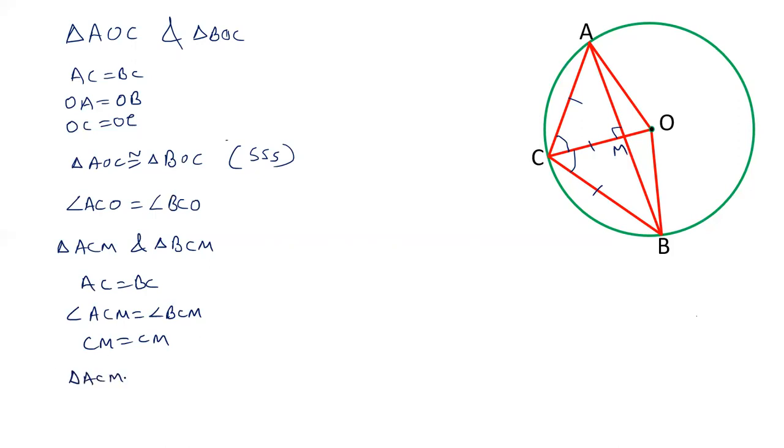So triangle ACM is congruent to triangle BCM by side angle side and therefore angle AMC is equal to angle BMC is equal to 90 degree.